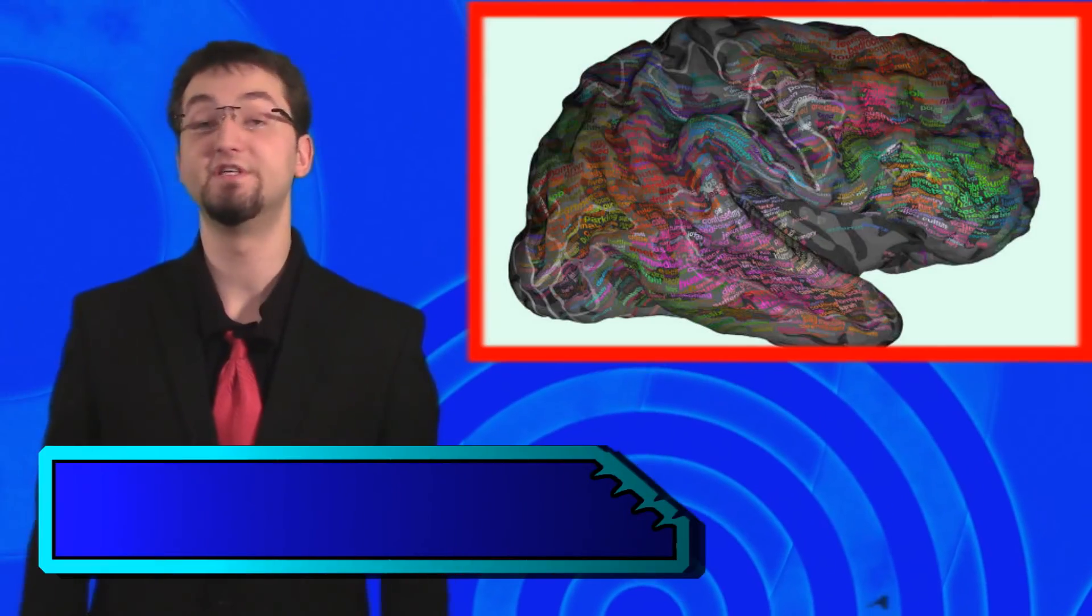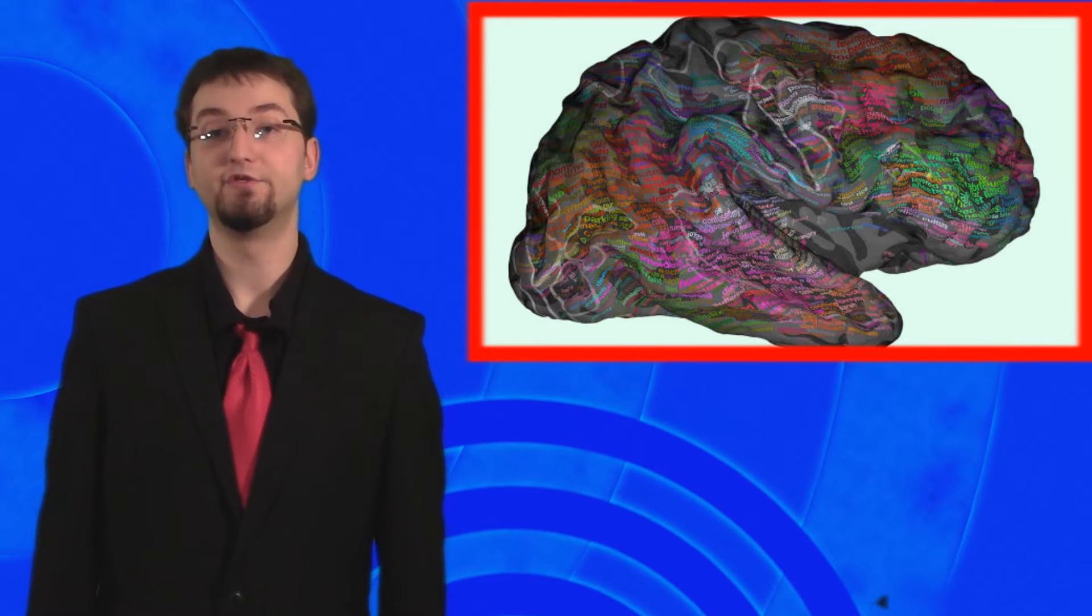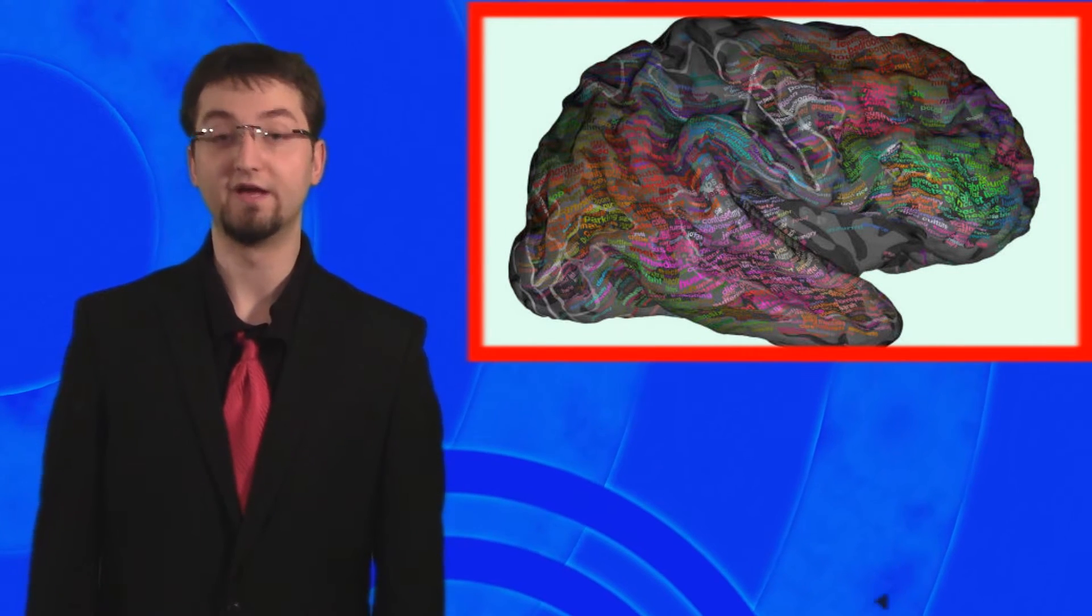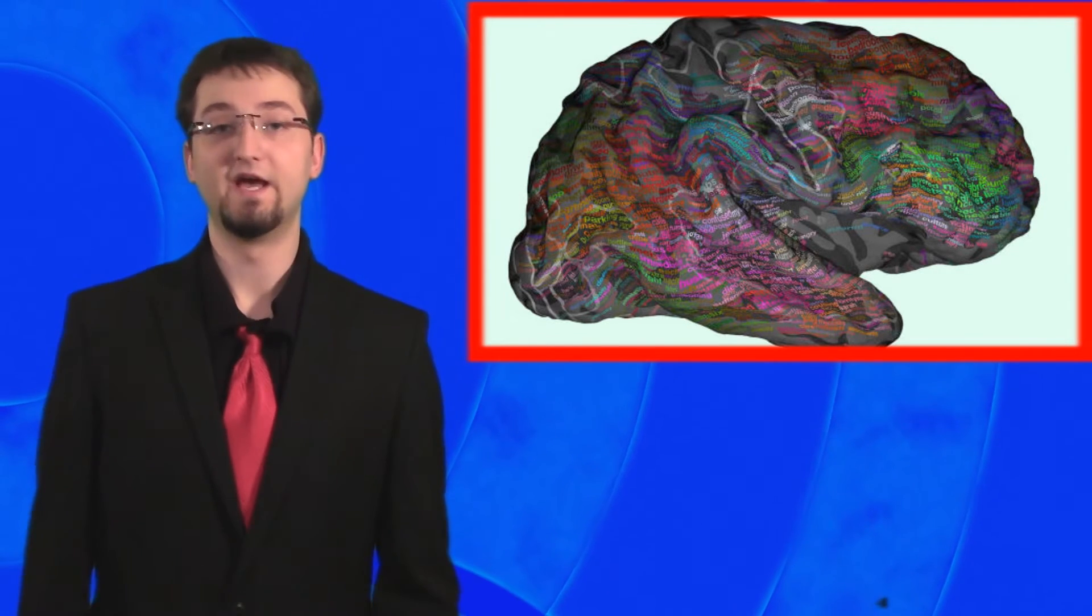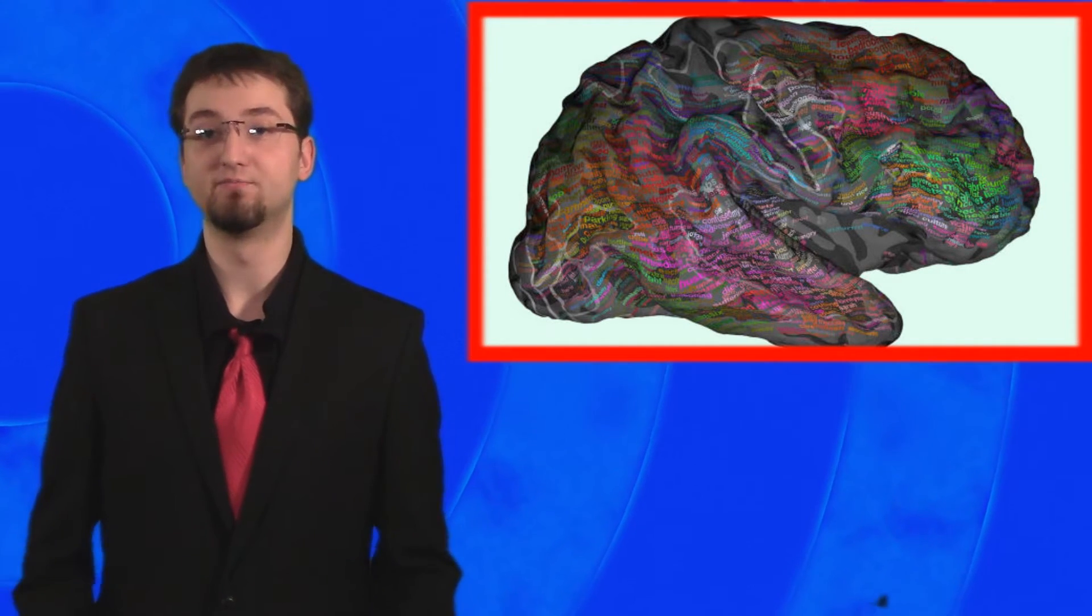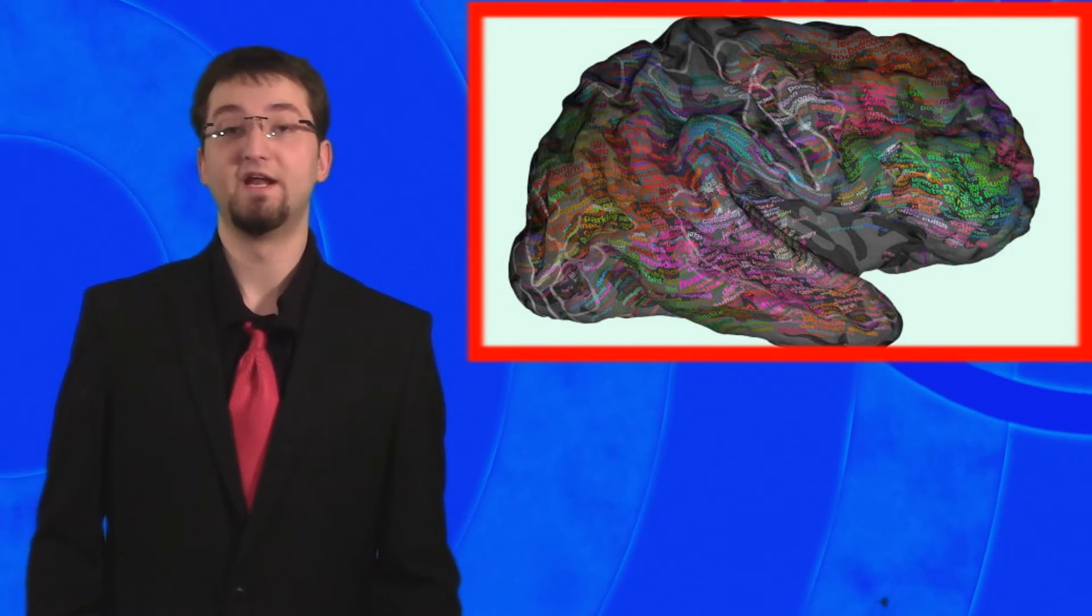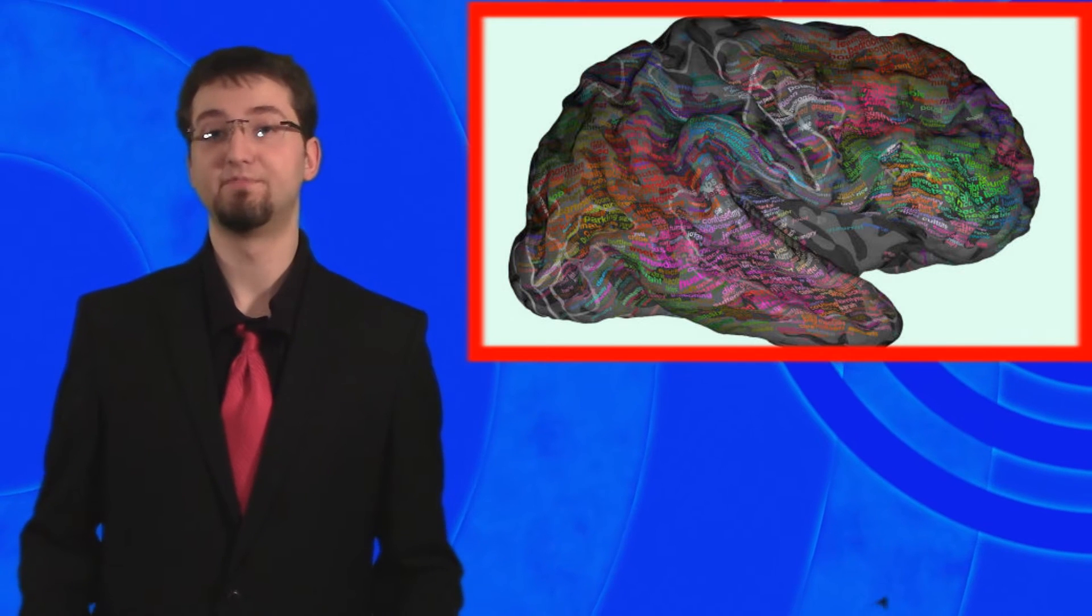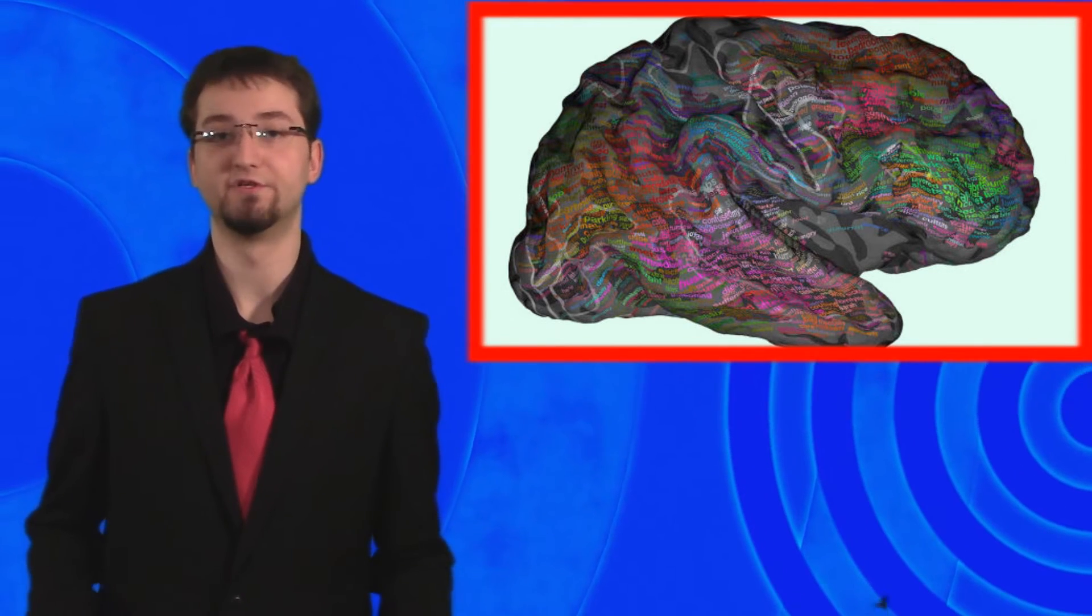Scientists at the University of California, Berkeley have created an interactive brain map. This online map allows you to explore where words are stored, like spatial, visual, and social communications. Scientists scan the oxygen levels of participants' brain while listening to various specific radio programs.